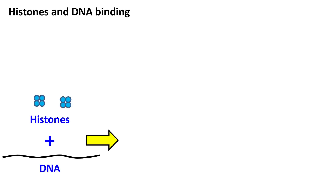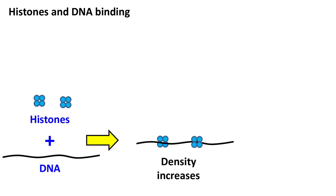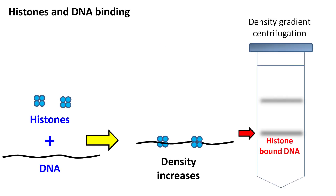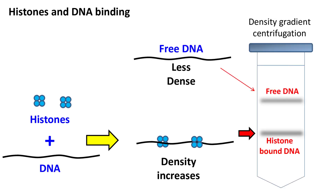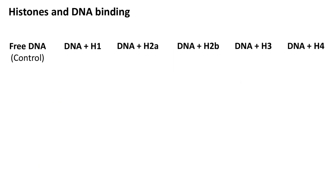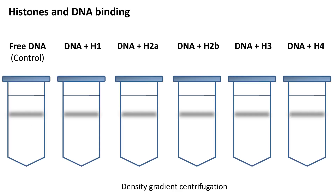Now let's see the experiments done to study the binding of histones with DNA. When histones bind DNA, the density of the overall structure increases. This change in density can be easily detected by density gradient centrifugation. When DNA is incubated with each individual histone, nothing happens — there is no change in the density of DNA. This means individual histones cannot bind DNA.